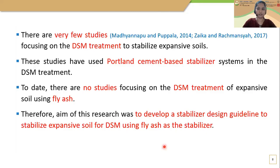According to the literature review, there are very few studies focusing on DSM treatment to stabilize expansive soil. Those studies have used Portland cement-based stabilizer systems in DSM treatment. To date, there are no studies focusing on DSM treatment of expansive soil using fly ash. Therefore, the aim of this research was to develop stabilizer design guidelines to treat expansive soil using fly ash as the stabilizer.